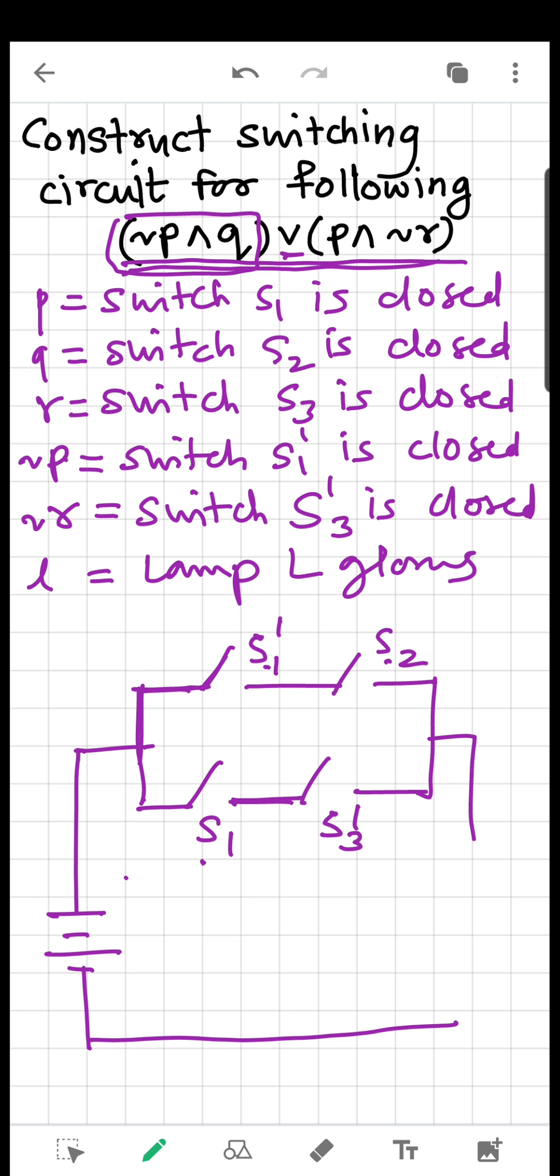And for output we have lamp L which will glow for certain conditions and does not glow for some. So we have this is battery, this is lamp and most importantly this is the direction of current. So this is the switching circuit for the given statement. I hope it is very easy but obviously it is to be done very carefully. Thank you.